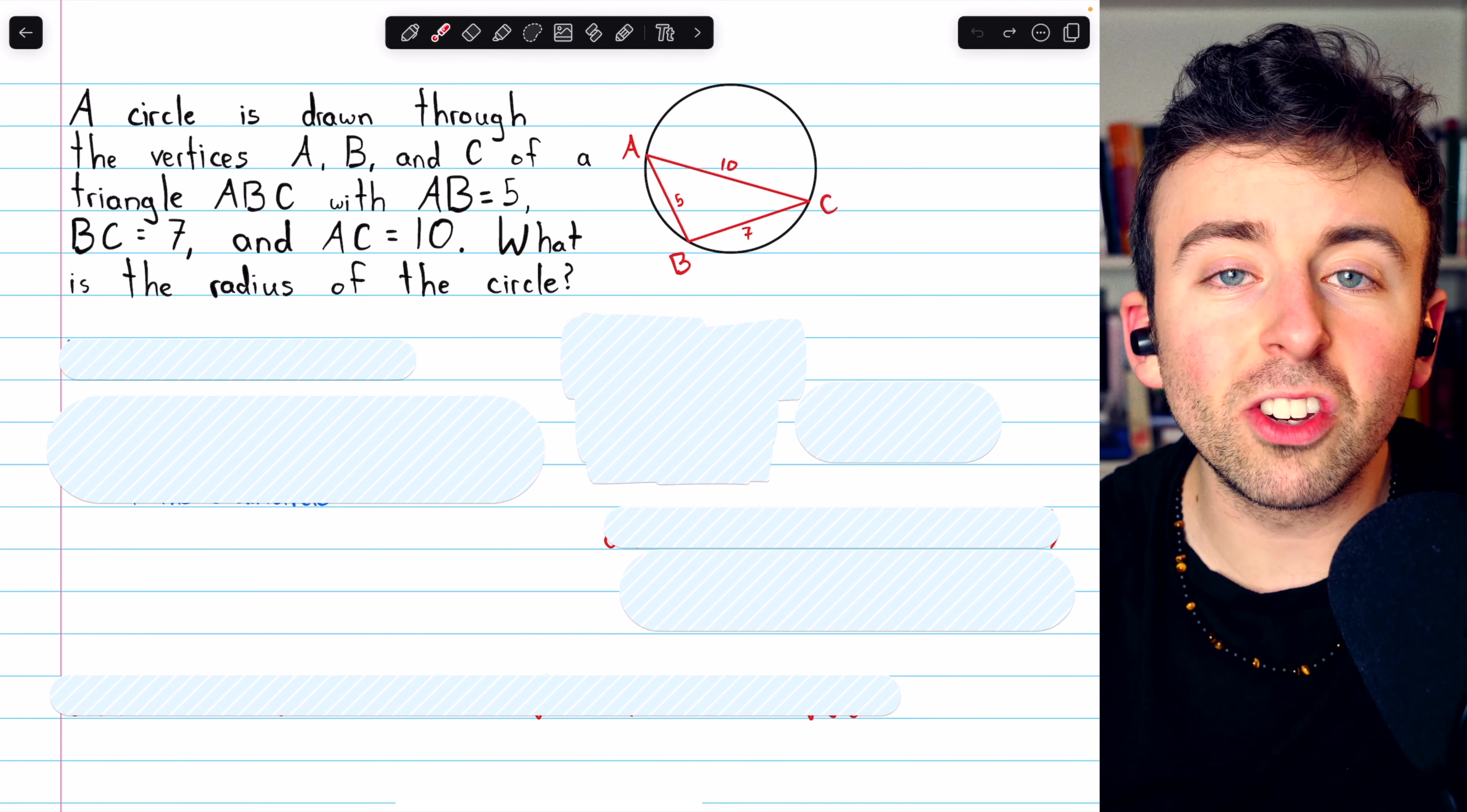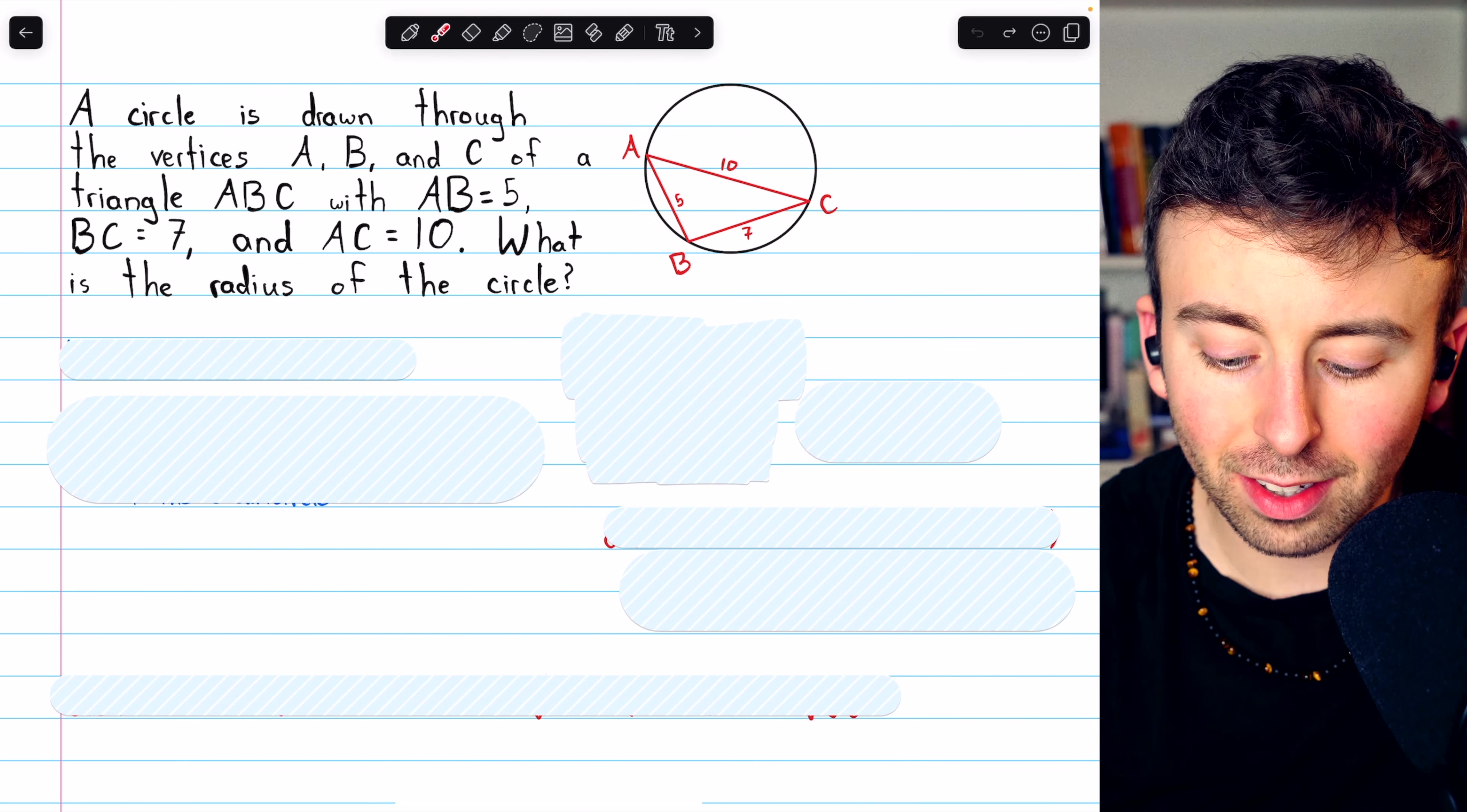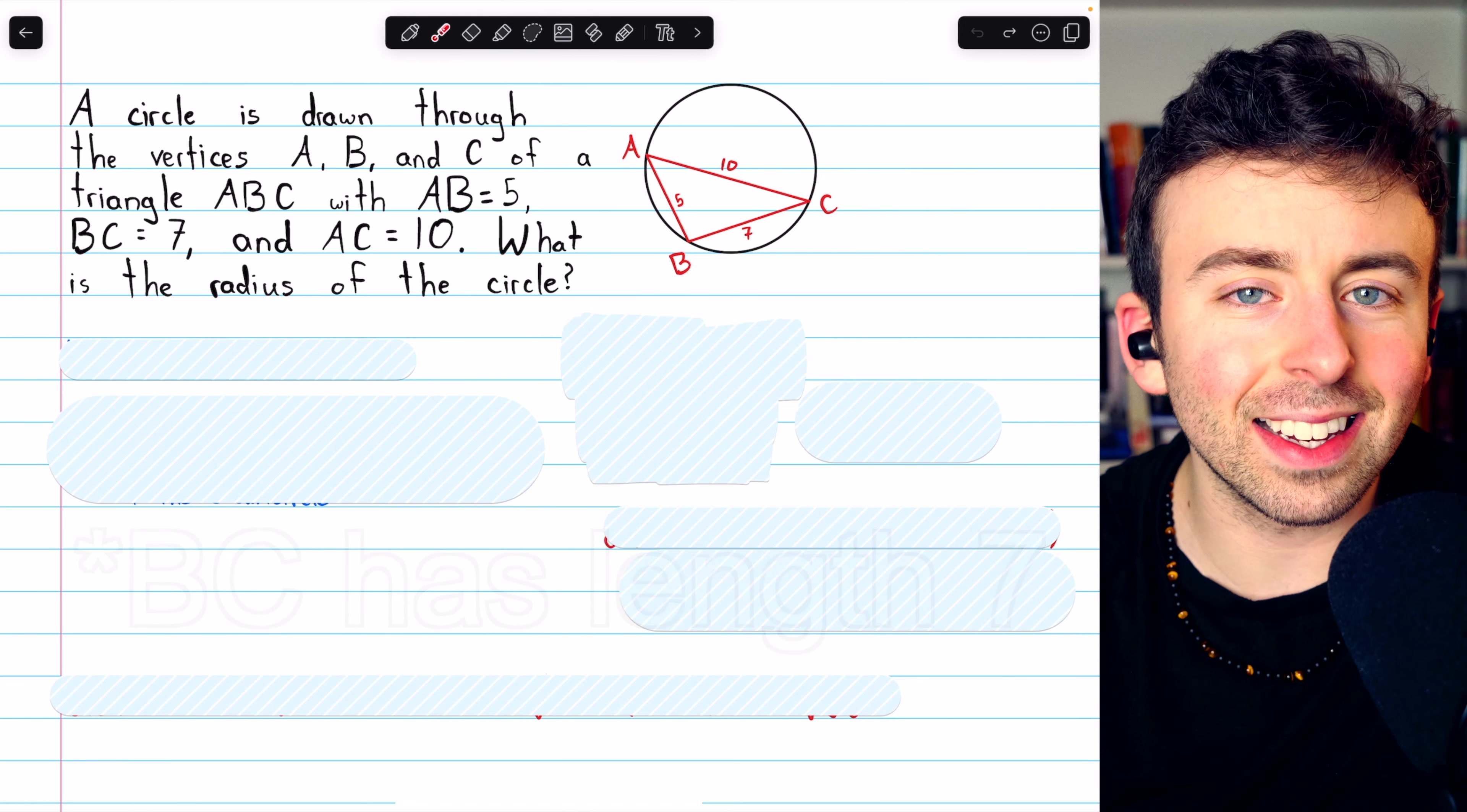So this is a circle which circumscribes the triangle. It passes through all of the triangle's vertices. As we can see, AB has length 5, BC has length 7, and AC has length 10.